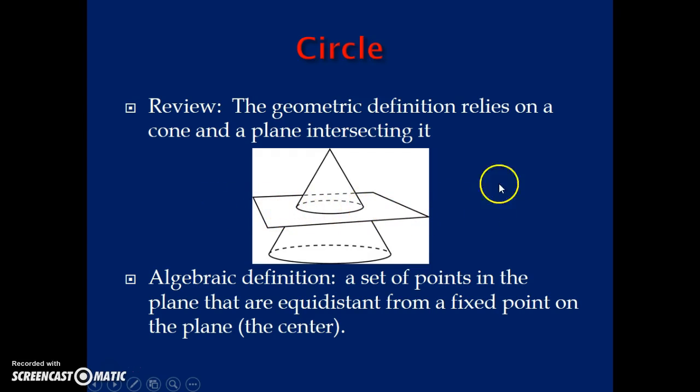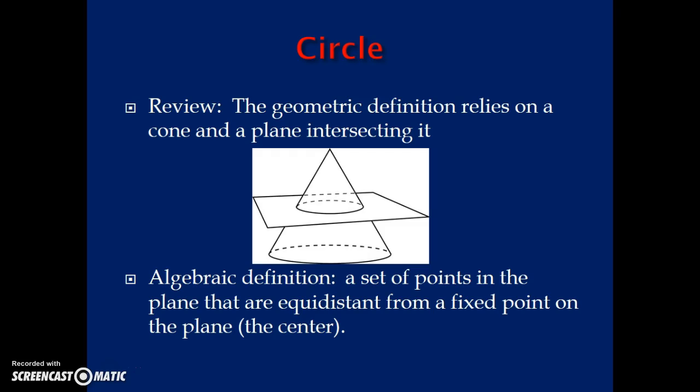The algebraic definition is a set of points in the plane that are equidistant from a fixed point in the plane, and we call that the center of the circle.